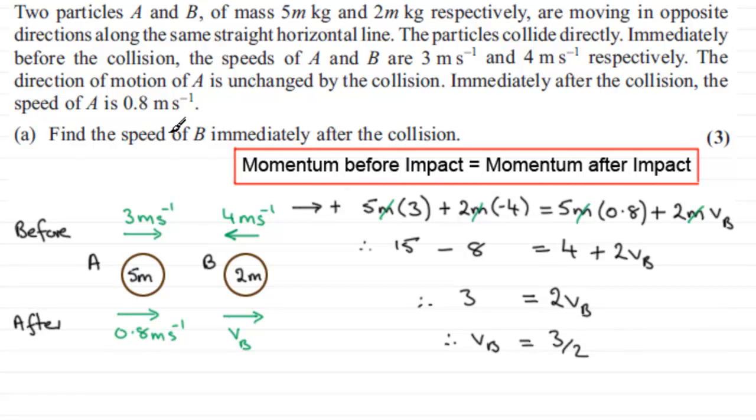Now it did say find the speed of B immediately after the collision. Speed is the magnitude of velocity, so whether it was moving to the left or the right, its speed is 1.5 or 3 over 2 meters per second. So therefore, the speed of B equals 3 over 2 meters per second.